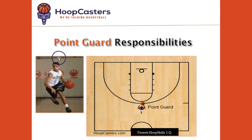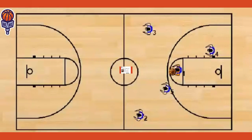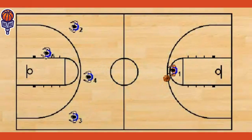Okay basketball families, now that you know the different positions on the floor, let's talk about the responsibilities of each position. We're going to start with the point guard position. If your child plays point guard, he has certain responsibilities. His main responsibilities are to first handle the rock and set the offense. Rock is just another term for basketball, and I'm going to use a lot of basketball terminology because that's going to help the game be more enjoyable and help you understand more about what's going on.